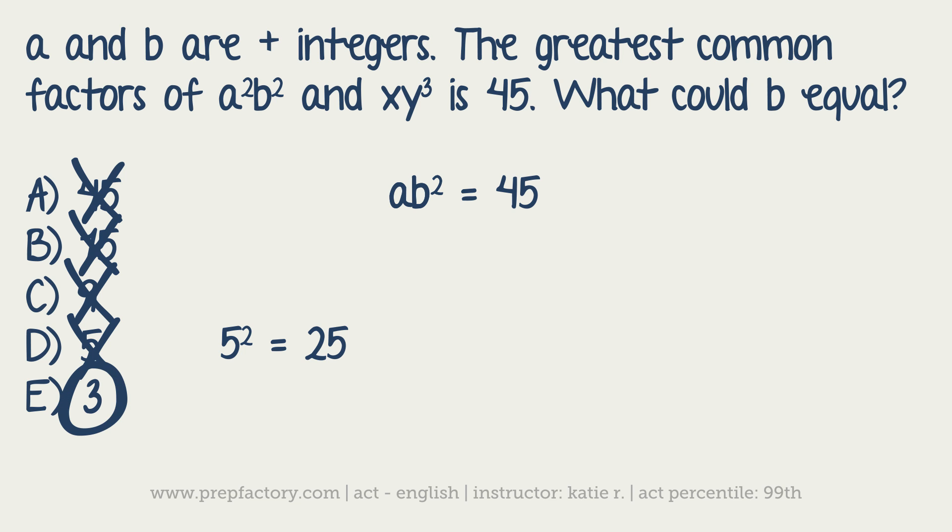Answer choice E, which means that must be correct. But let me go ahead and double check it for you guys. So you've got a times 3² is equal to 45, which would mean 9 times a is equal to 45. And then if you just divide both sides by 9, a would equal 5. Great. 3 and 5 are both positive integers, so that works out. So your answer choice is E.